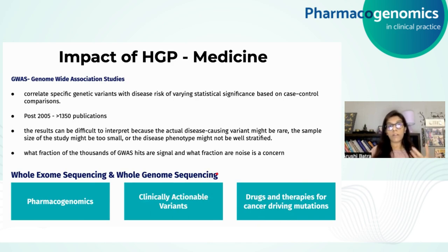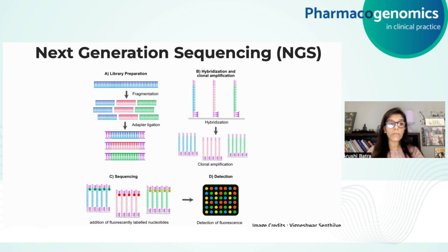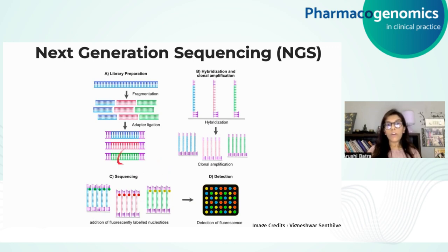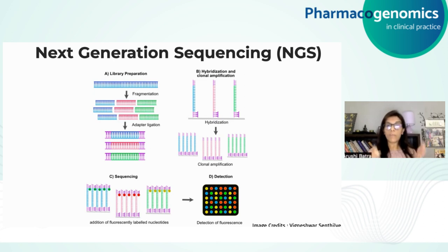The impact of HGP on medicine and other aspects of biology and technology has been huge. Whole exome sequencing and whole genome sequencing through next generation sequencing have paved the way for understanding pharmacogenomics — essentially meaning that one drug does not fit all — and understanding adverse drug reactions. NGS is a technique from the second generation of sequencing in which fluorescently labeled dNTPs are sequentially incorporated into a DNA template strand in a massively parallel manner, catalyzed by DNA polymerase.